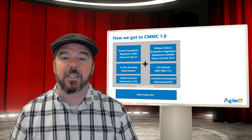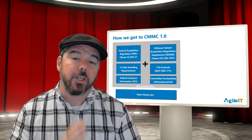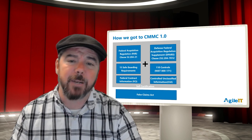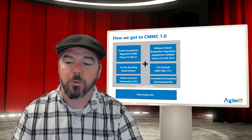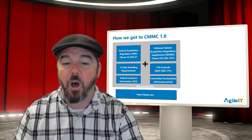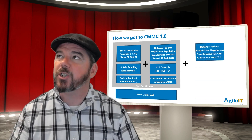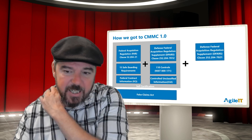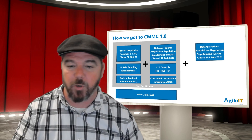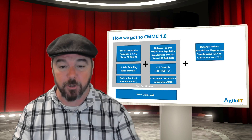In 2019, the DOJ obtained over $3 billion in False Claims Act settlements, including an $8.6 million settlement with Cisco for undisclosed security vulnerabilities. So it obviously wasn't working. After a bunch of industry discussions, the first draft of CMMC was made public in 2019, with version one of the document being published January 2020.